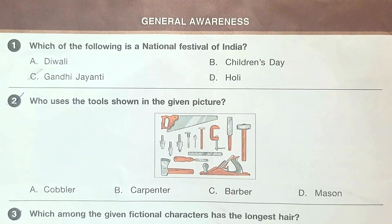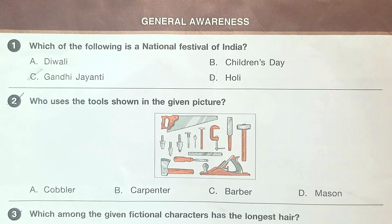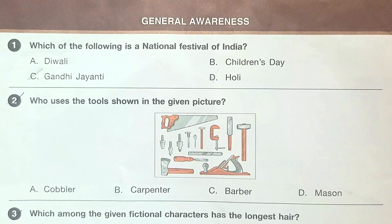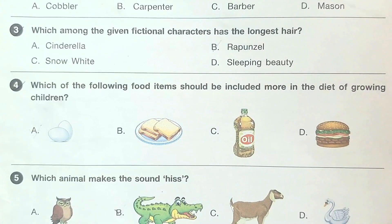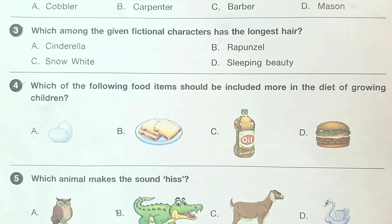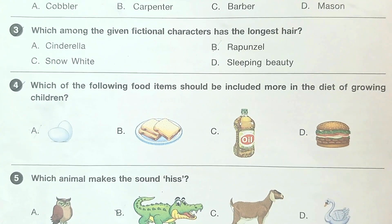Question number 2: who uses the tools shown in the given picture? The answer is option B, Carpenter. Third question: which among the given fictional characters has the longest hair? The answer is option B, Rapunzel.